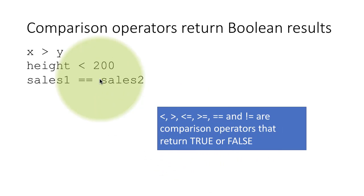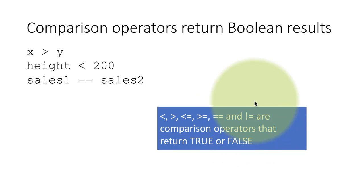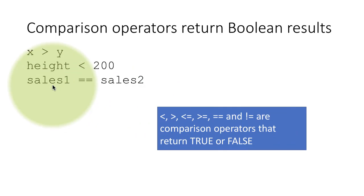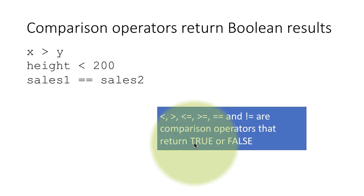There are many other comparison operators. Here we have looked at three: greater than, less than, and double equals. But you also have less than or equal to, greater than or equal to, double equals, and exclamation equals, which is the not equals operator. So here you are comparing two things for equality, but sometimes you may just want to know if two things are unequal, in which case you use not equal to. All of these return Boolean results — either true or false — depending on what arguments you supply to these operators.